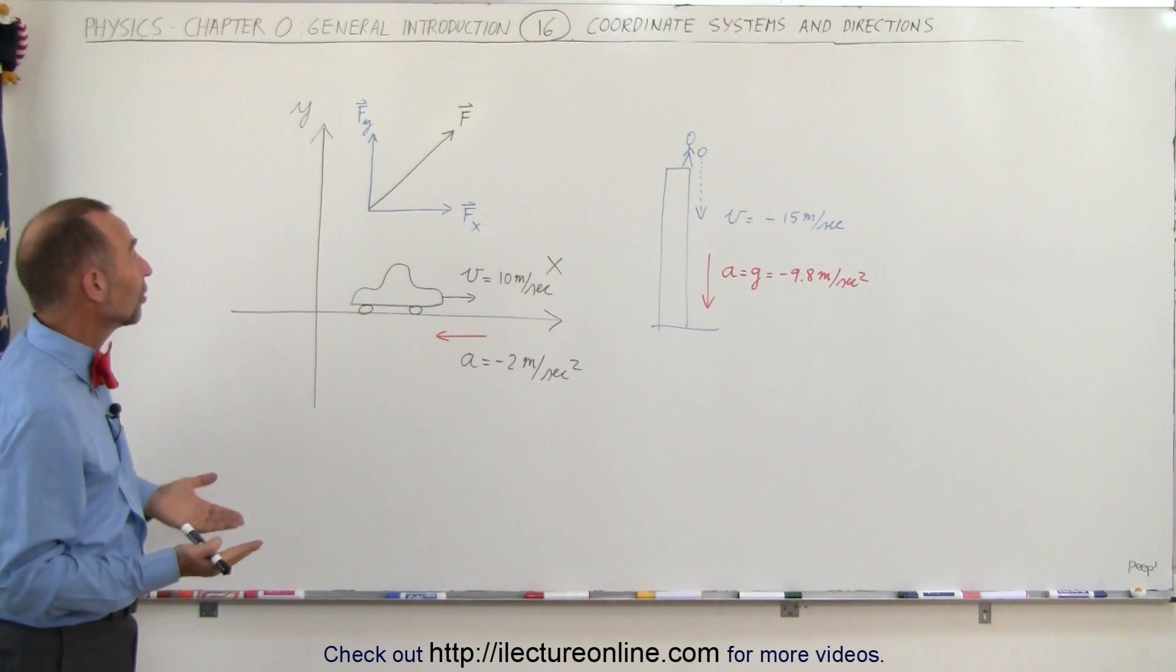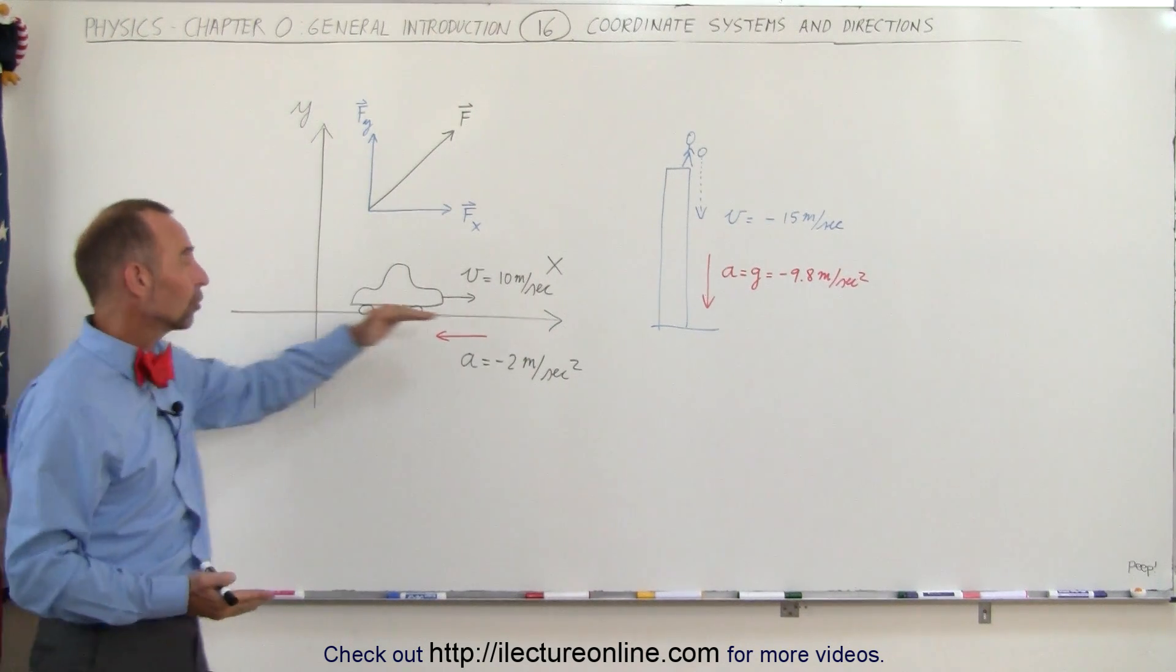For example, we typically are used to seeing a coordinate system where y is the vertical axis and x is the horizontal axis.